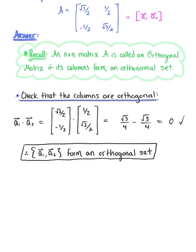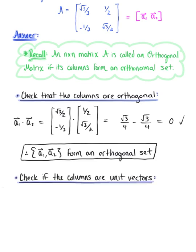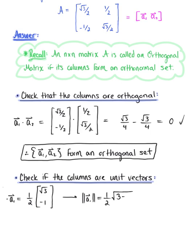Now we need to check if these columns are unit vectors. Starting with column vector a₁, I'm going to factor out the scalar multiple of one half. So we have (1/2) multiplied by the vector (√3, −1). Finding the length of this column vector, we keep the scalar multiple of 1/2 in front, multiplied by the square root of (√3)² + (−1)², which gives us √(3+1) = √4. So we have √4 over 2, which is 2/2, which equals one. So our first column vector is a unit vector.